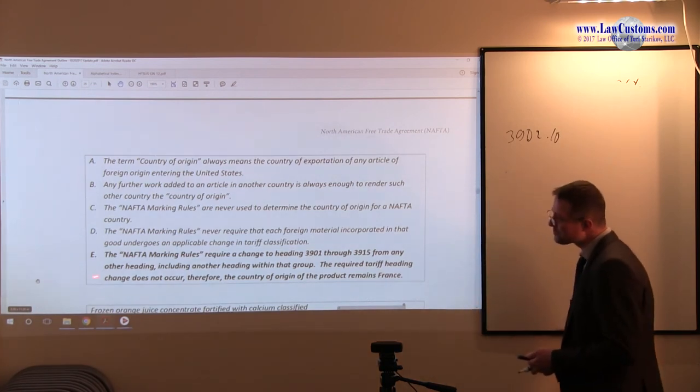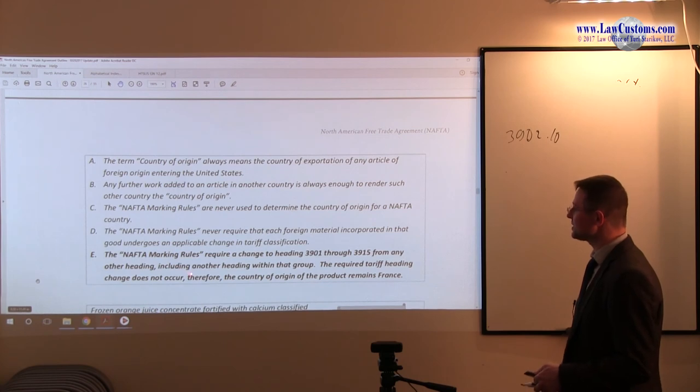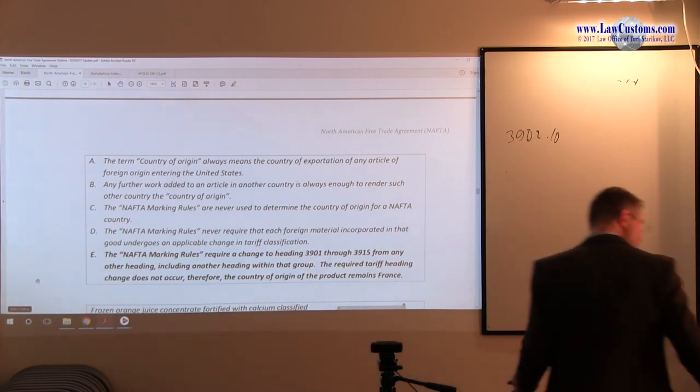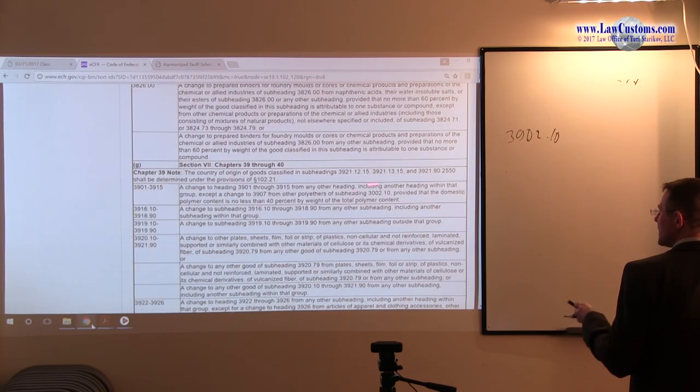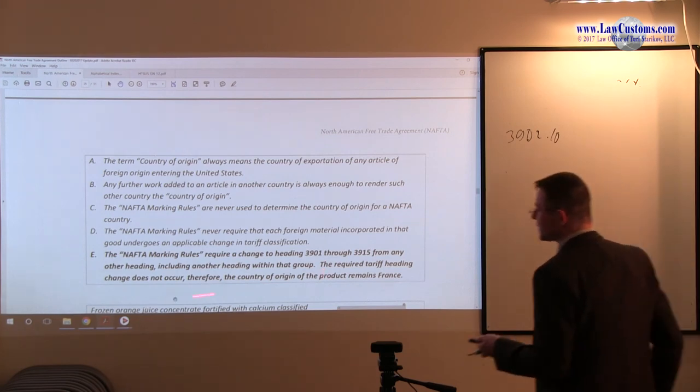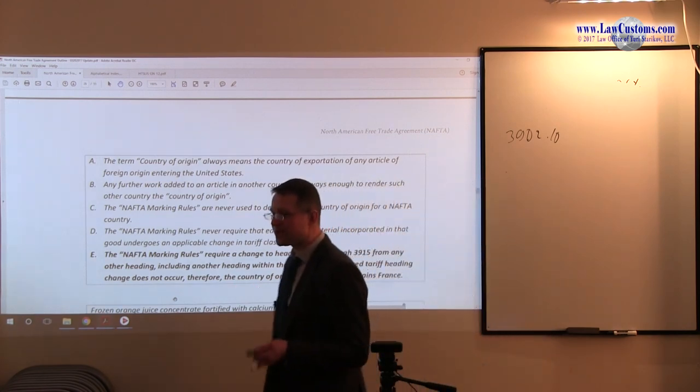Let's take a look at what it says. The NAFTA marking rules require a change to heading 39.01 through 39.15 from any other heading, including another heading from within that group. The required tariff heading change does not occur, therefore the country of origin of the product remains France. This is the quotation from that particular section that we saw. This is pretty much copy and paste provision. The second part, the required tariff heading change does not occur, therefore country of origin of the product remains France, is the application of that rule.